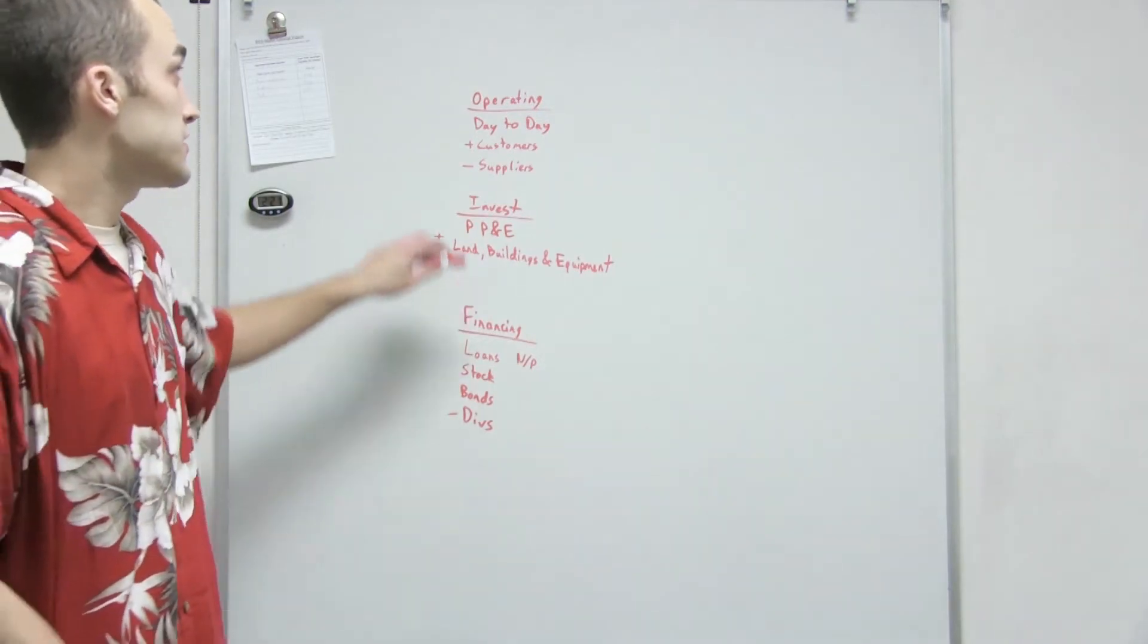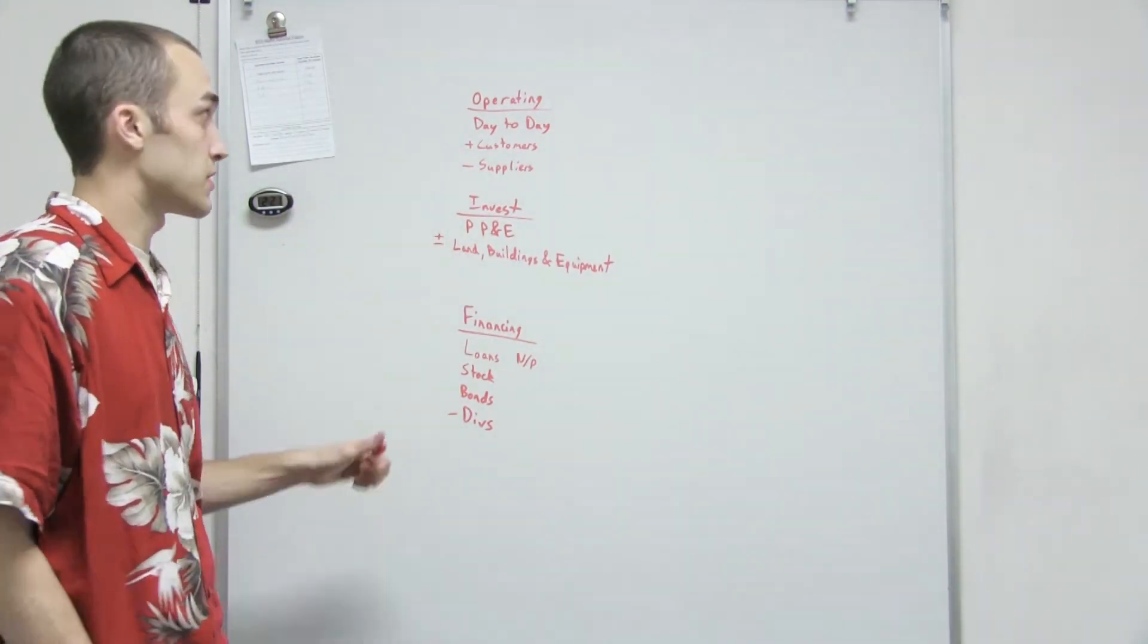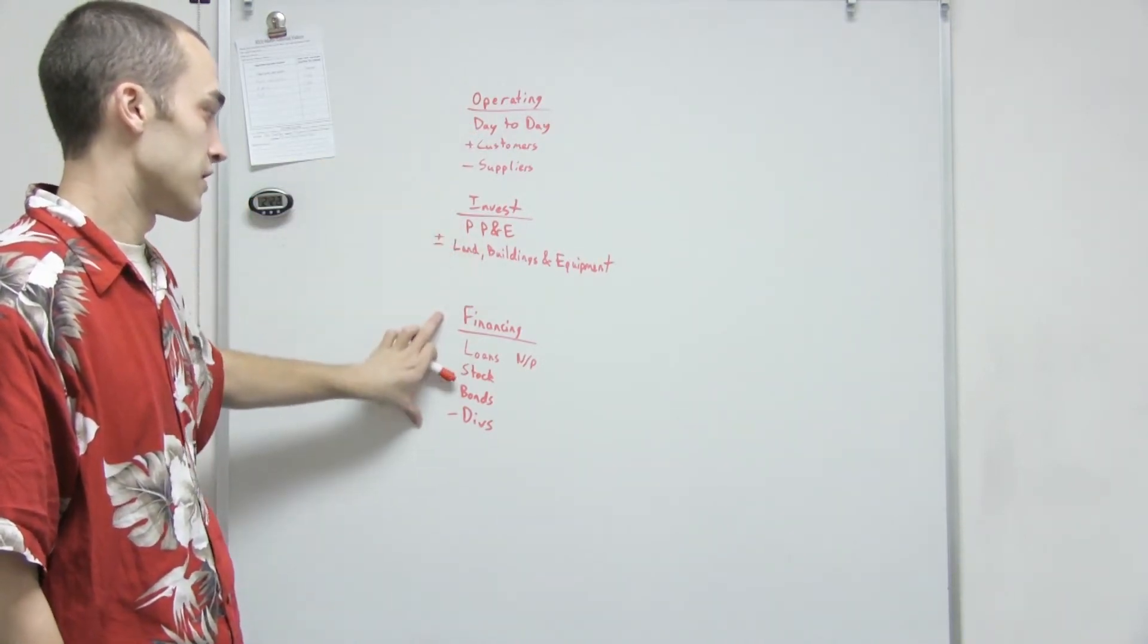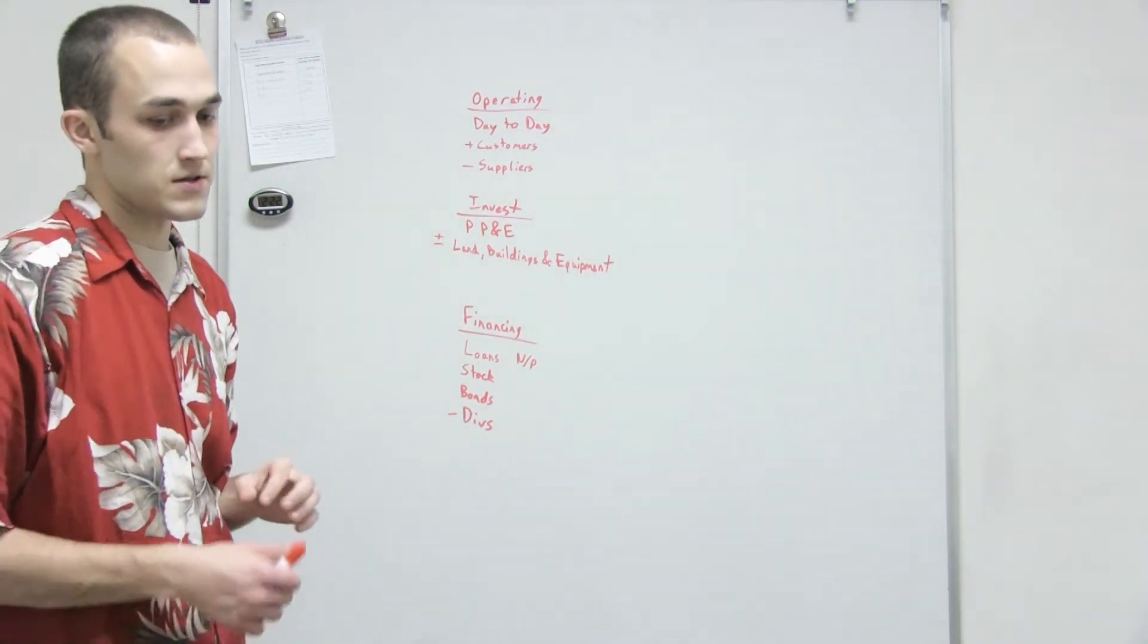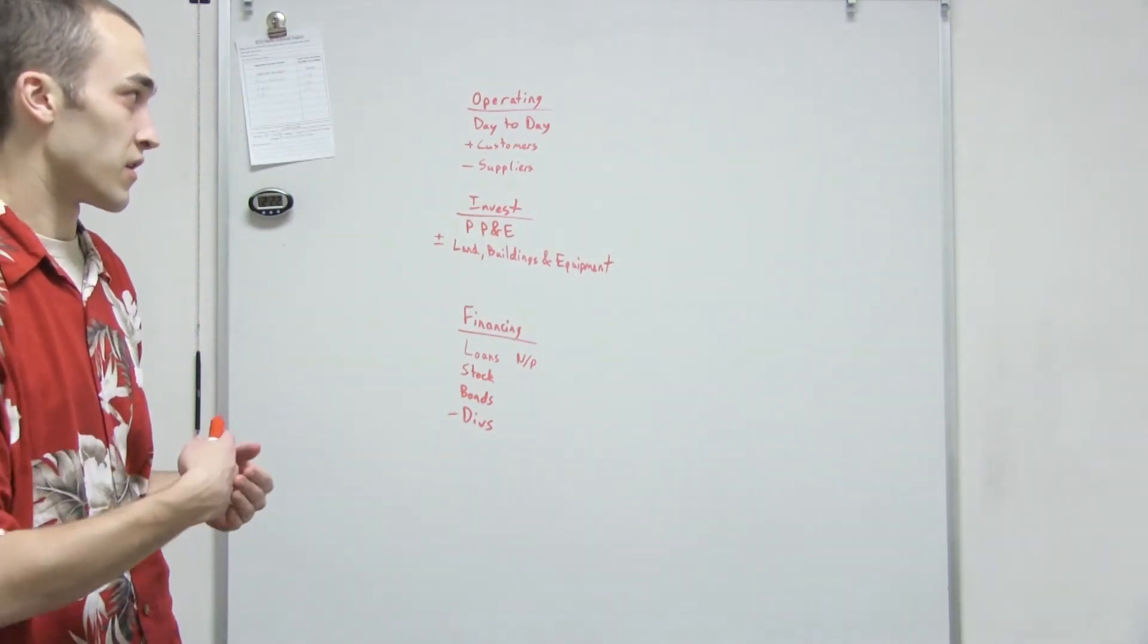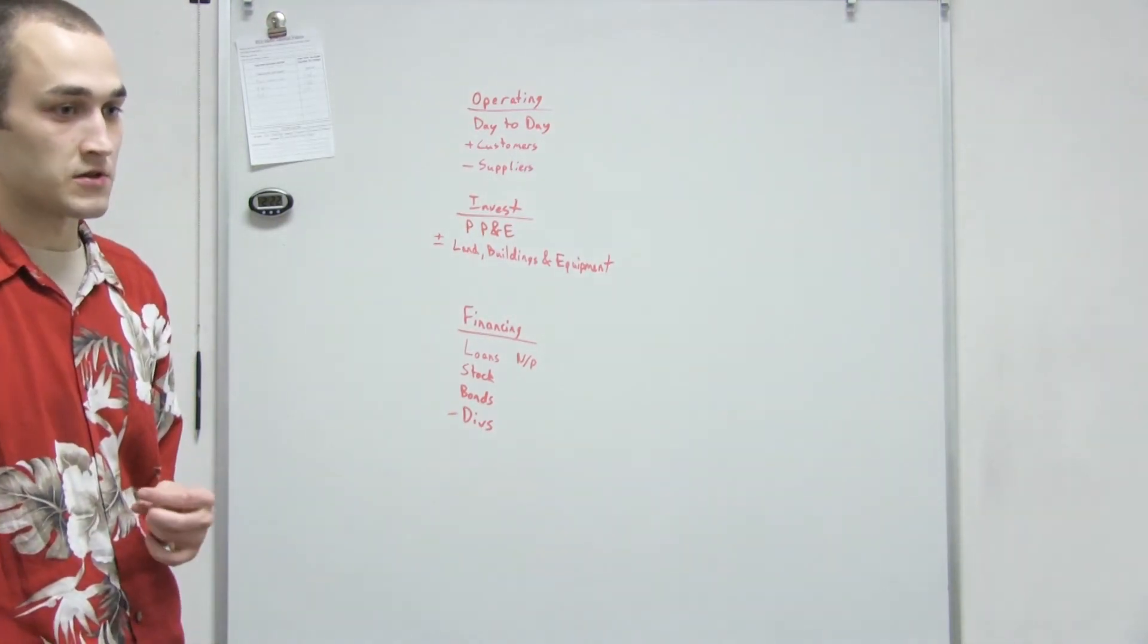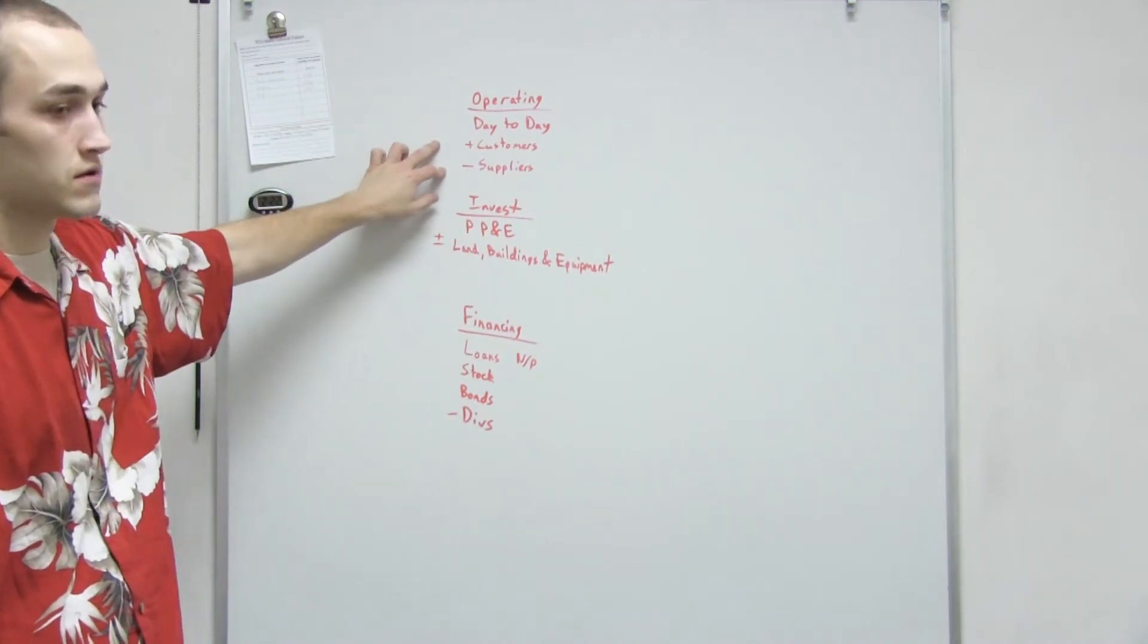Okay. So this is pretty much how the cash flow statement is set up. You have your operating activities first, then investing, and then financing. The only thing with the cash flow statement that makes it different from everything else is it's only dealing with cash. So like your income statement, you could be making money by cutting someone's grass, but if they don't pay you until next month, it wouldn't appear on here.